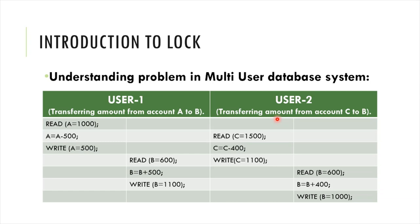User 1 reads A; the amount is 1000. After transferring 500 rupees: A = 1000 − 500 = 500. Write A = 500. Then User 2 performs its operation: reads C = 1500, C = C − 400 = 1100, and B = 400. So B = 400 and A = 500 at this point.